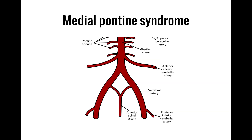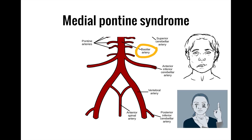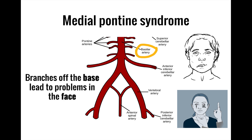Medial pontine syndrome is associated with occlusion of branches off of the basilar artery, so blockages in these branches can present as facial asymmetry and internuclear ophthalmoplegia. You can remember this with the phrase: 'branches off the base lead to problems in the face.'